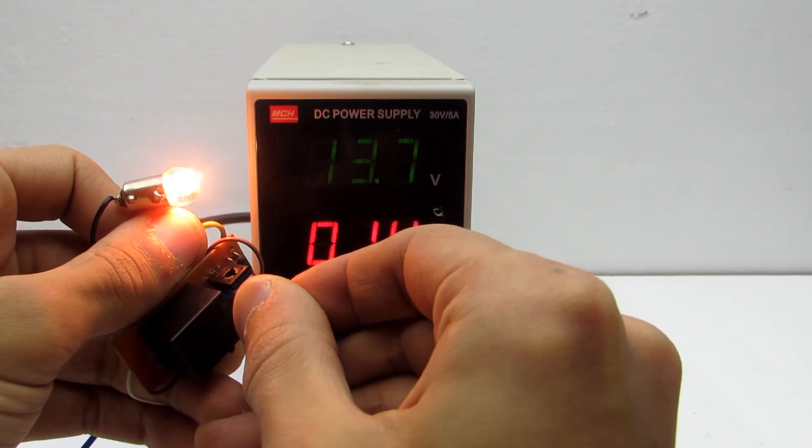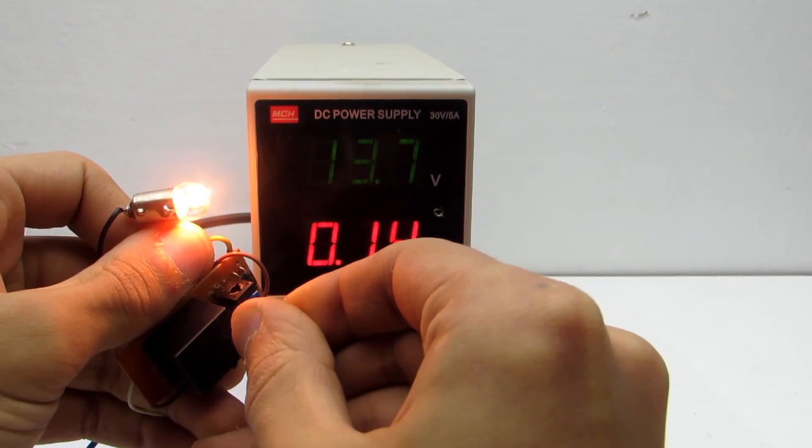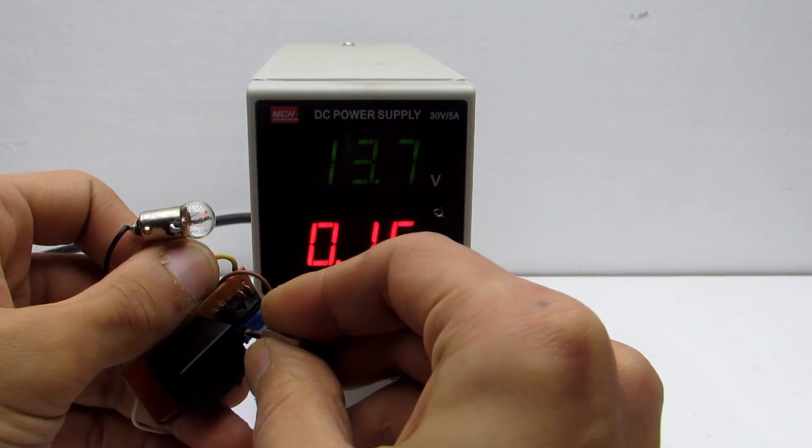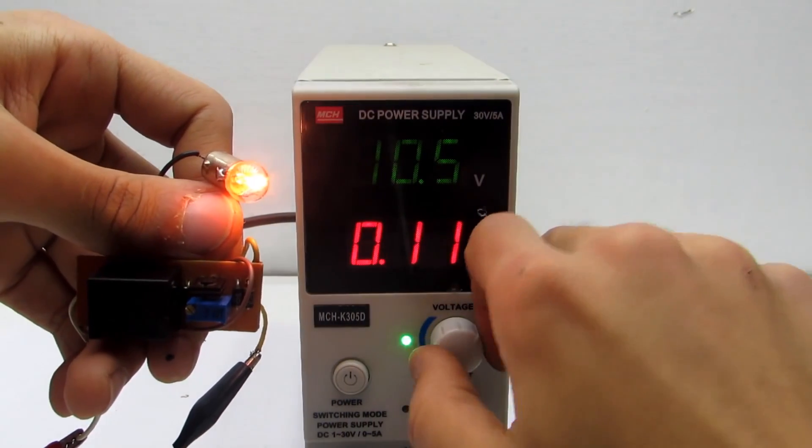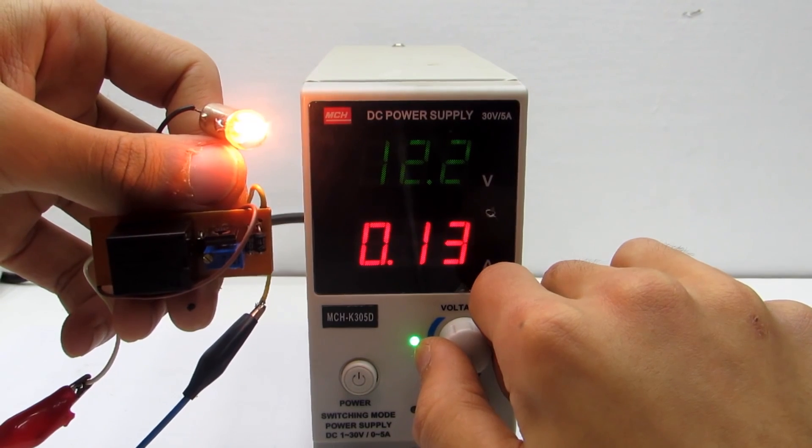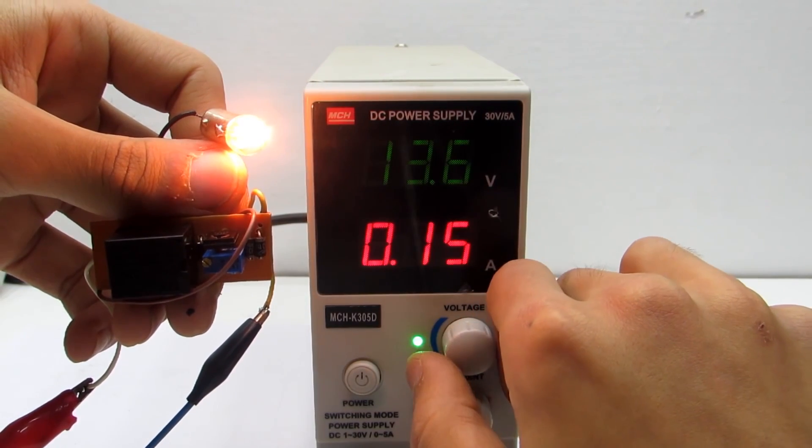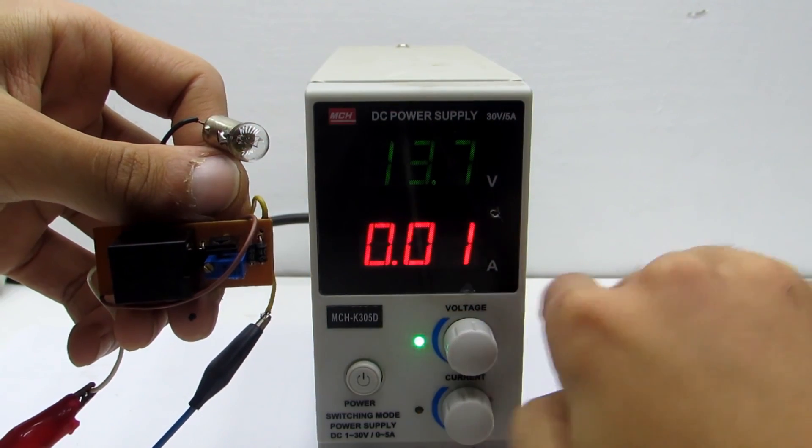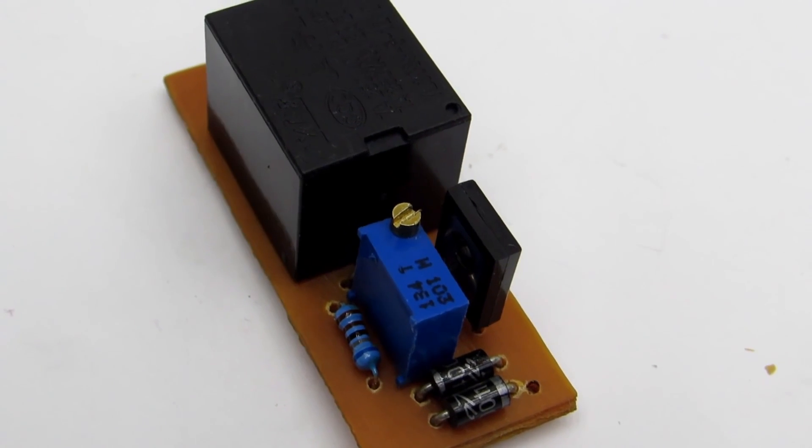Then slowly rotate the variable resistor to achieve transistor operation, and therefore the relay too. Now check the circuit again. For example, at the beginning of charging the battery voltage is 12 volts. As the charge increases and reaches the threshold of 13.5 volts, the switch is activated and turns off the charger from the mains.